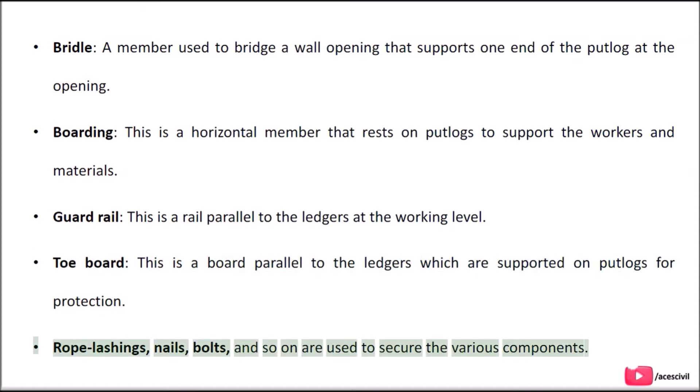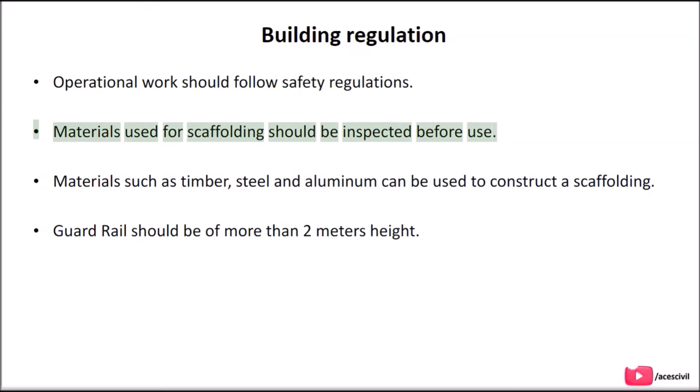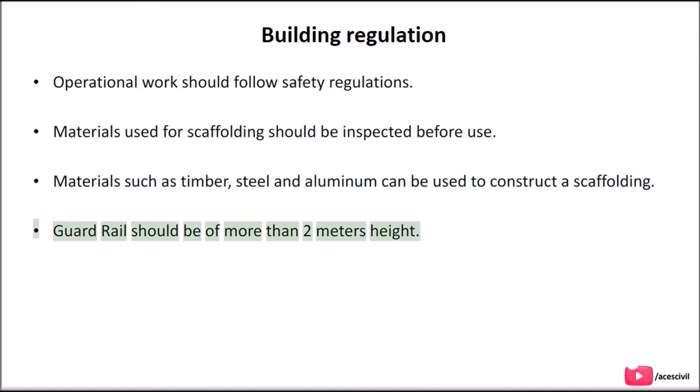Rope lashings, nails, bolts, and so on are used to secure the various components. Building Regulations: Operational work should follow safety regulations. Materials used for scaffolding should be inspected before use. Materials such as timber, steel, and aluminum can be used to construct scaffolding. Guardrail should be of more than 2 meters height.